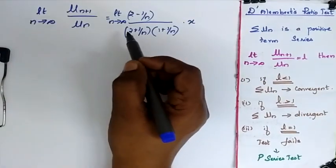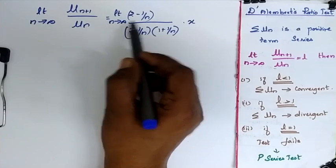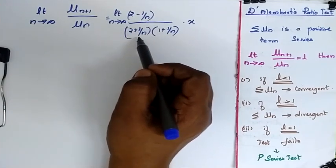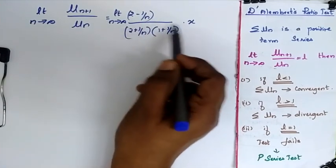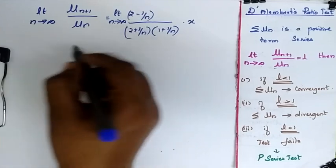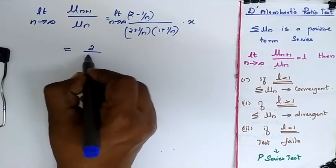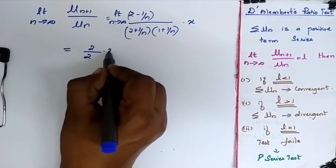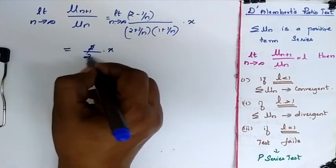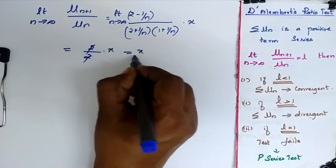The limit as n tends to infinity of un+1 by un gives us 2 divided by 2 into x, since all the 1/n terms become 0. So this is equal to x.